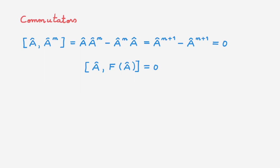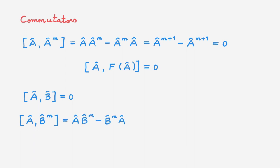For the second case, consider two different operators A and B that commute. The commutator of A with the nth power of B can be written out, and since A and B commute, we can rearrange to get zero. In turn, the commutator of A with any function of another operator B that commutes with A is also equal to zero.